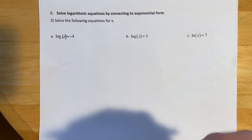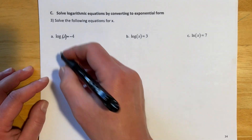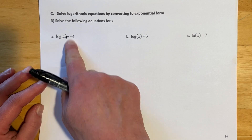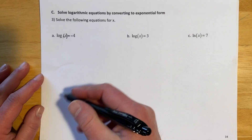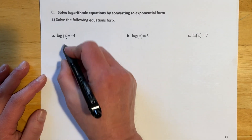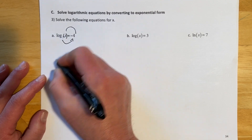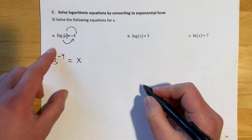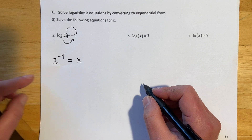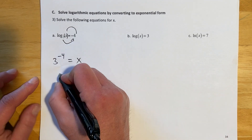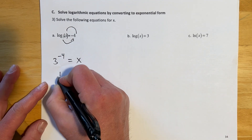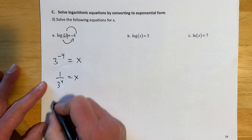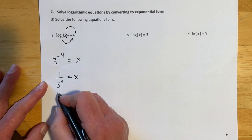For log base 3 of x equals negative 4 — it just bounces off your brain in that form — but if you rewrite it in exponential form as 3^(-4) = x, you're much closer to the answer. 3^(-4) is 1 over 3^4, and 3^4 is 81, so x = 1/81.